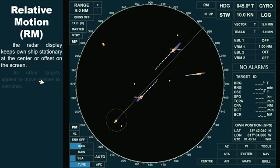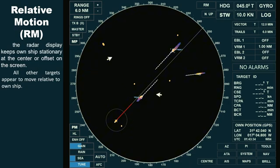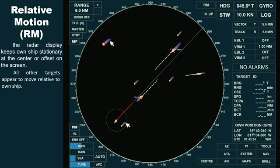Meanwhile, in relative motion display, all other targets appear to move relative to our ship. Even stationary targets, such as buoys, land masses, or anchored vessels, appear to move relative to own ship's position. When the trail is set to true, no trails will appear for stationary objects. However, if the trail is set to relative, all stationary targets will display trails that give the illusion of moving in the opposite direction of the own ship's motion.